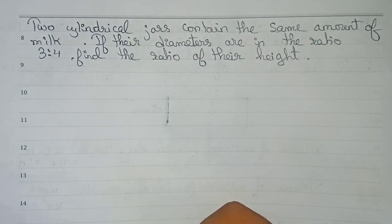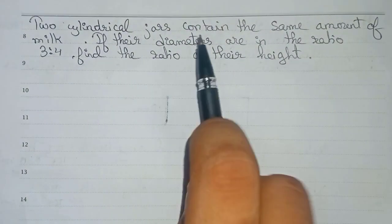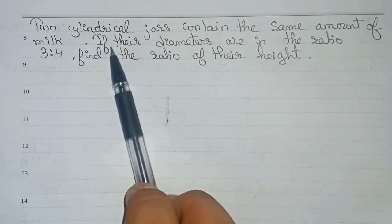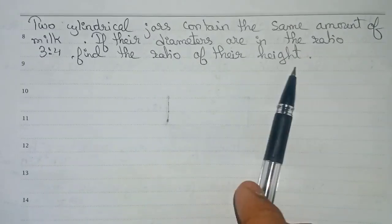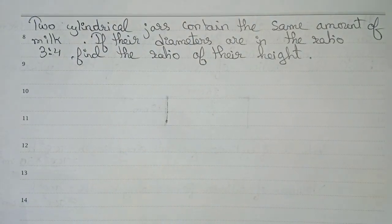Hello guys, welcome to this video. In this video, the question is: two cylindrical jars contain the same amount of milk. If the diameter ratio is 3 to 4, find the ratio of their height.